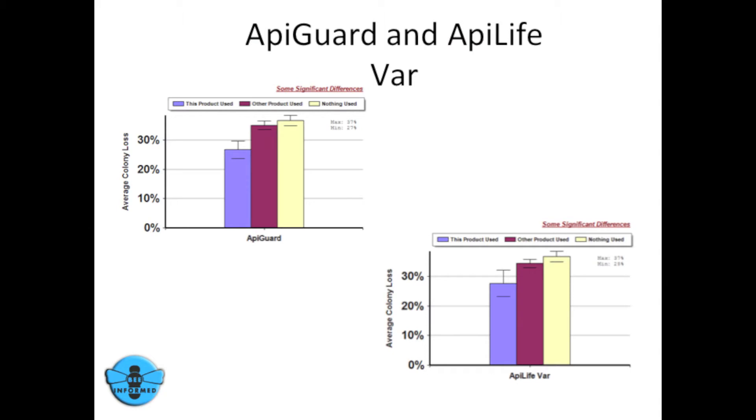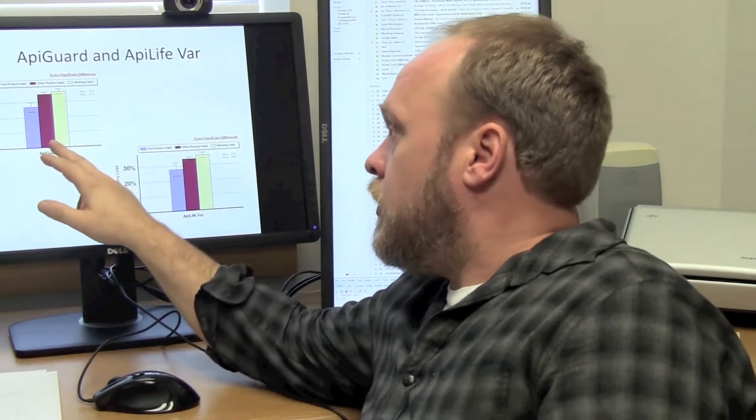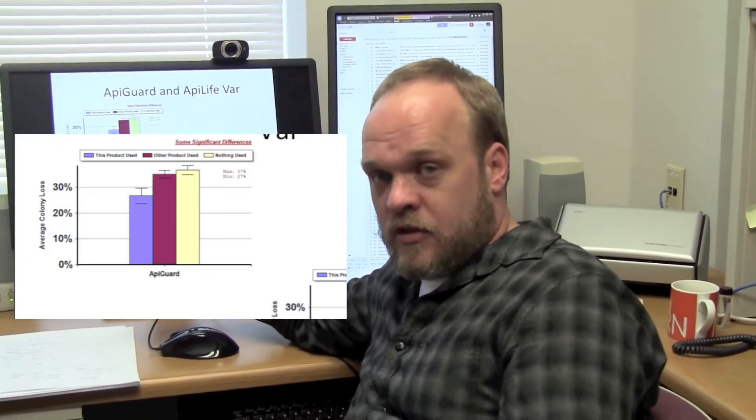In this graph, you can see three bars. The yellow bar represents beekeepers who used no known varroa mite control product at all. The maroon bar is someone who used another known varroa mite control product, and the blue bar is someone who used that particular product.